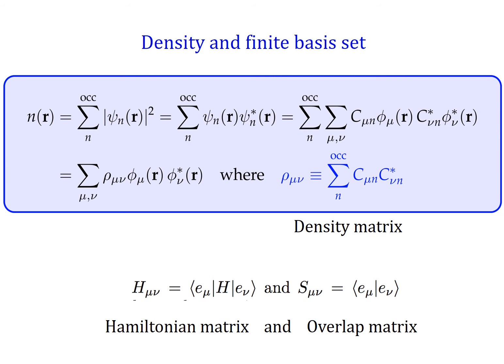At the end we have three matrices that are the key matrices for the calculations we are going to be performing within any of these electronic structure codes: the Hamiltonian matrix, the overlap matrix, and the density matrix.